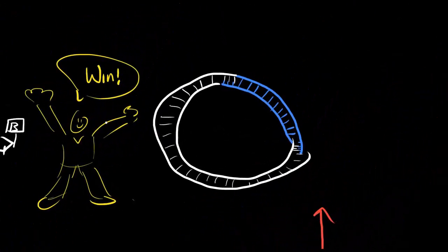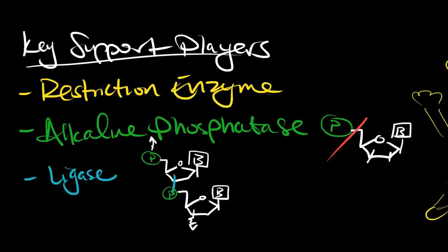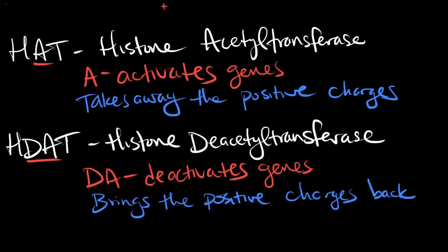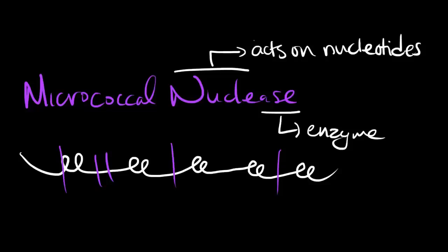As I said before, when DNA is too condensed or tightly packed, proteins cannot access it. Enzymes known as HAT (H-A-T) acetylate the tails, taking away the positive charges of those tails. This loosens the DNA, allowing other enzymes to get in.